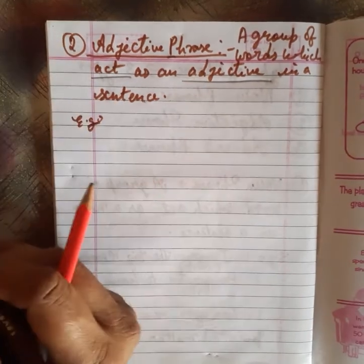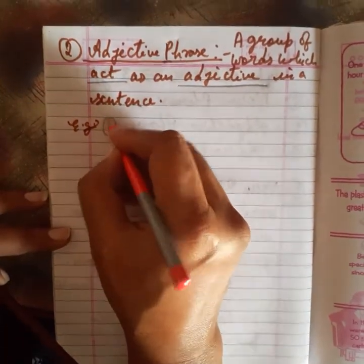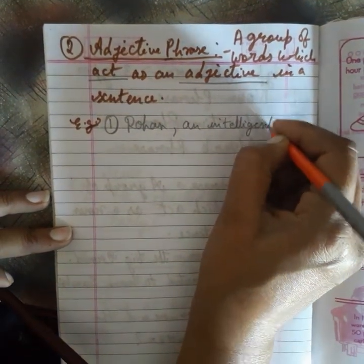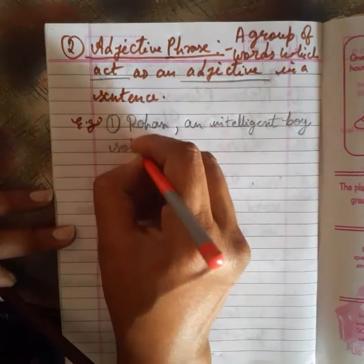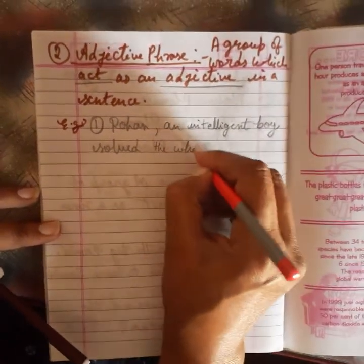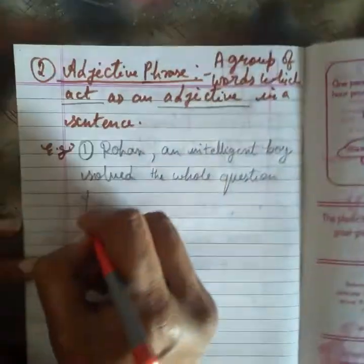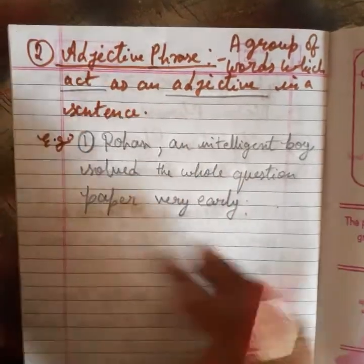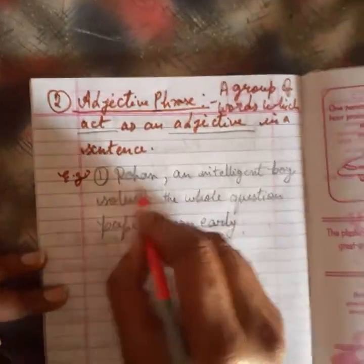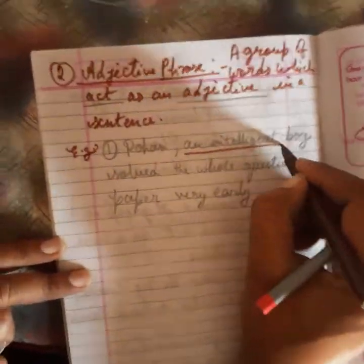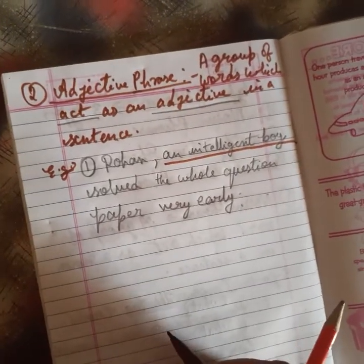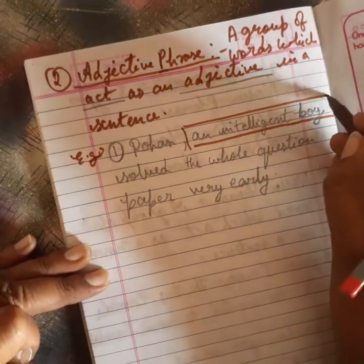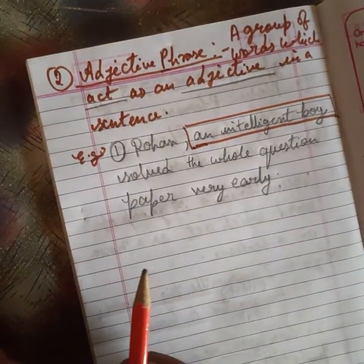Adjective phrase का example: 'Rohan, an intelligent boy, solved the whole question paper very early.' यहाँ पर 'an intelligent boy' क्या है? यह Rohan की विशेषता बता रहा है। Adjective वो होता है which qualifies noun and pronoun — Rohan यहाँ noun है, और 'an intelligent boy' उसकी विशेषता बताता है। तो 'an intelligent boy' यहाँ पर adjective phrase हो जाएगा।